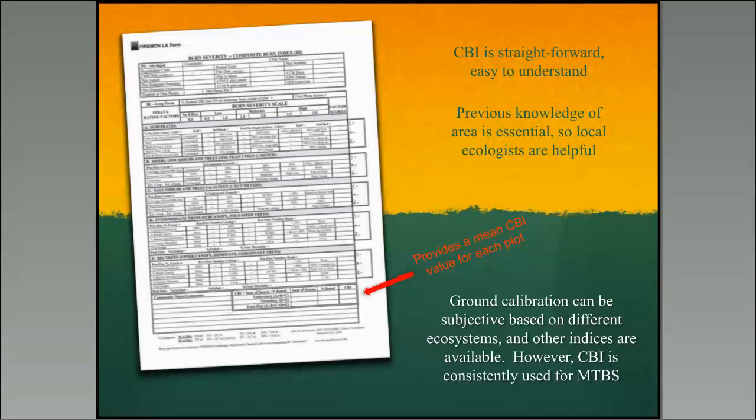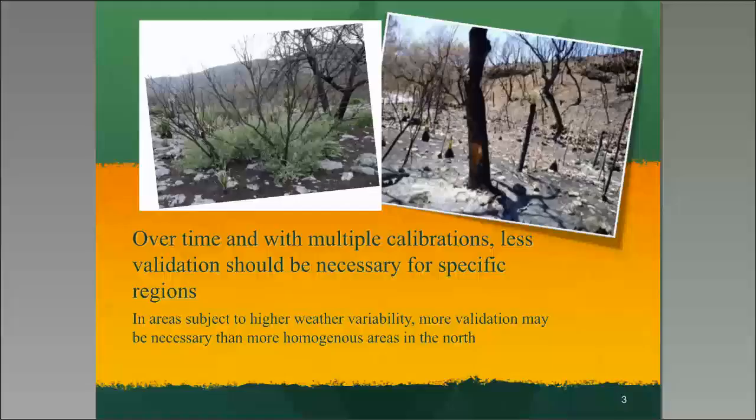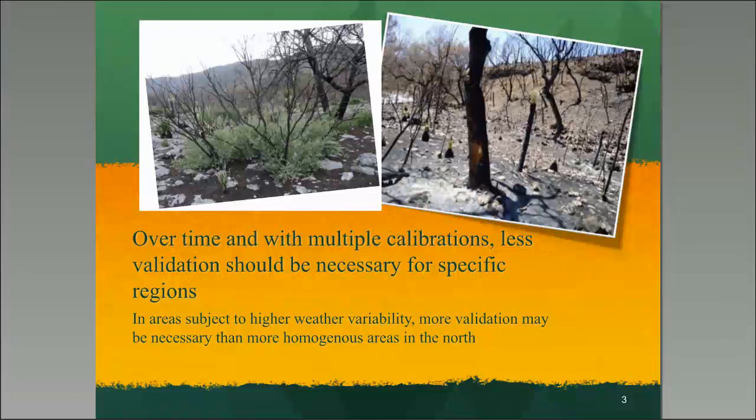Over time and with multiple calibrations, you'll need less validation for specific regions. Up in the northwest, things are pretty homogenous, but down here we're more heterogeneous. With climate patterns, we're seeing even more variability, so we'll probably need a lot more validation than other areas — and so does Nate. But after our first stab at it, we had a really high accuracy rate, so I'm feeling a little bit better about this.